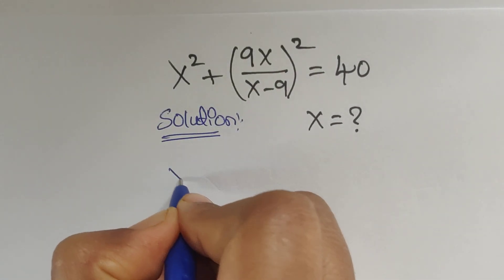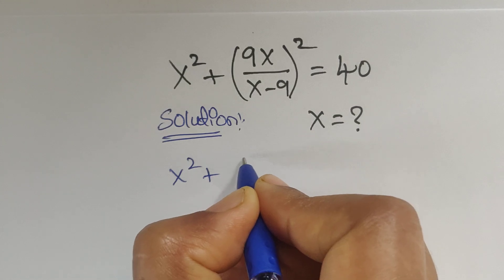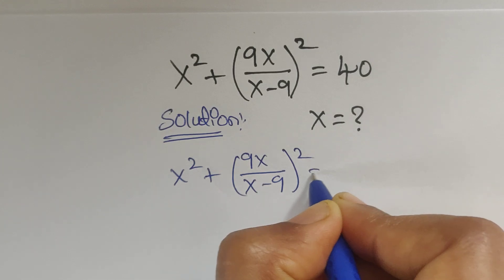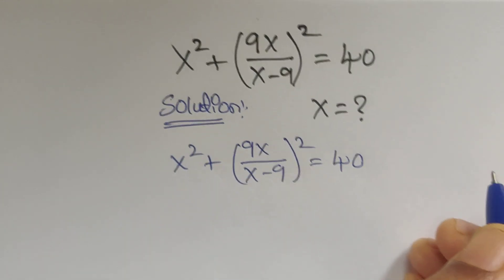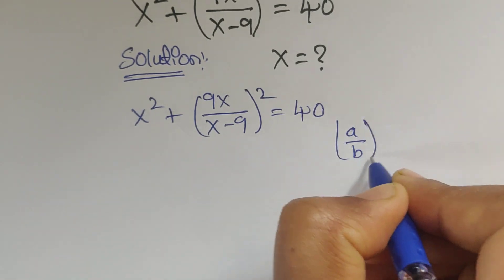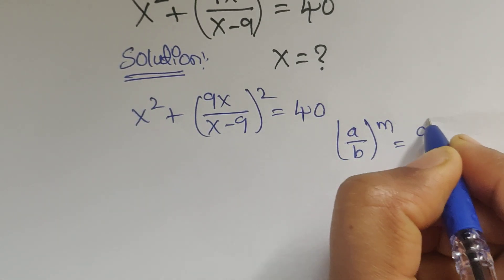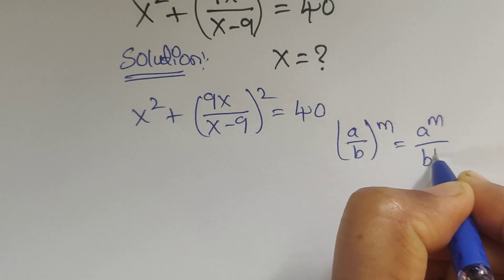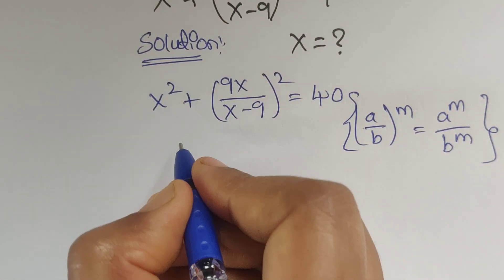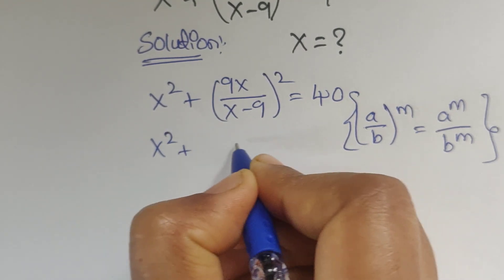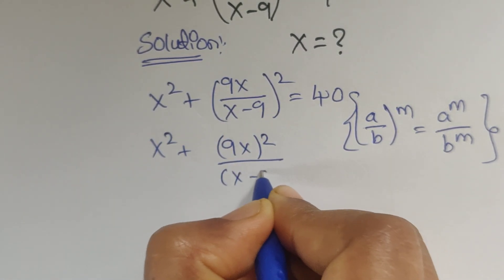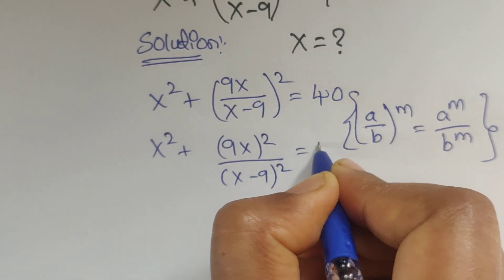We have given x squared plus 9x divided by x minus 9, whole to the power of 2, equal to 40. Here we can apply the formula: a divided by b, whole to the power of m, equals a to the power of m divided by b to the power of m. Using this formula, we can write x squared plus 9x squared divided by x minus 9 whole square equals 40.